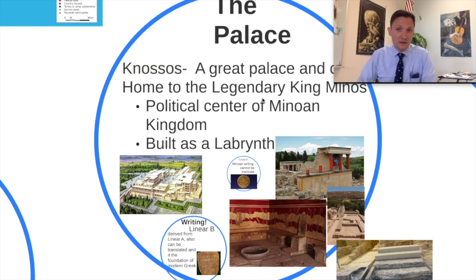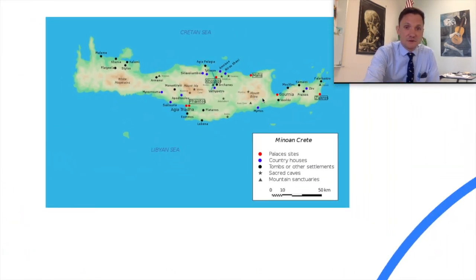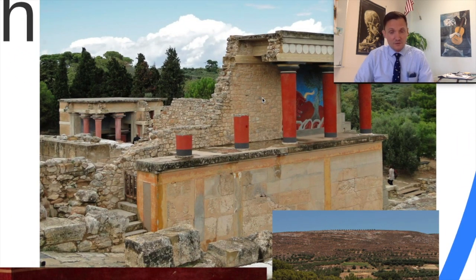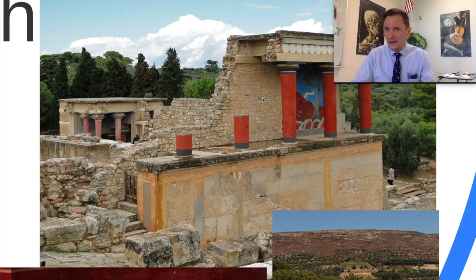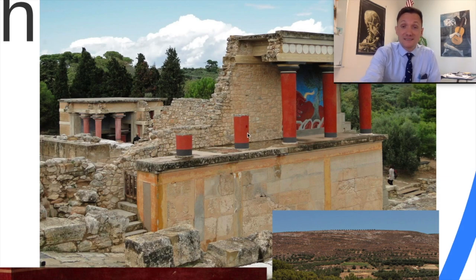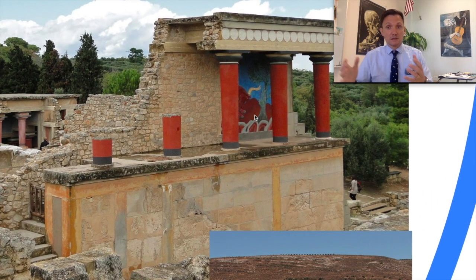A labyrinth — if you haven't seen the really ridiculous David Bowie movie from the late 1980s — is a maze-like structure, a structure that has tons of different hallways and is hard to navigate. But before we get there, let's marvel for a brief moment at the amazing foundational aspects of Greek culture that exist at the Palace of Knossos.